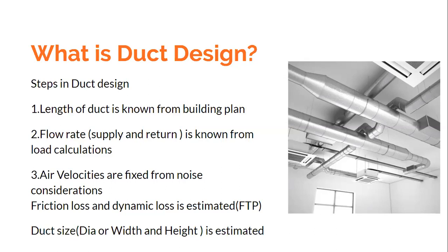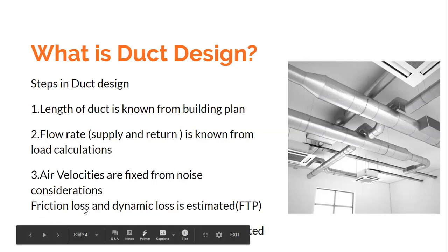As explained in the load calculation videos, the output of load calculations is: one, we know the apparatus dew point of the coil for cooling and dehumidification; and two, we know the flow rate. The velocity of air to be supplied is generally fixed from noise considerations, which I will explain in another video. Once you know all those things and the duct lengths, you can make a fairly good estimate of the frictional losses and dynamic losses. The frictional losses can be estimated using the friction chart — that is the topic of this lecture.